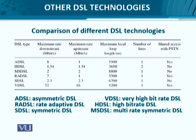Starting with ADSL, we have a downstream data rate of 8 Mbps and upstream of 1 Mbps. Compare this with High Bit Rate DSL (HDSL). Despite its name, HDSL is limited to only 1.54 Mbps — the T1 transmission standard for the US and Japan. However, HDSL is highly symmetric. It can cover a maximum distance of around 3.65 kilometers, but it requires two telephone lines and cannot coexist with telephone calls.